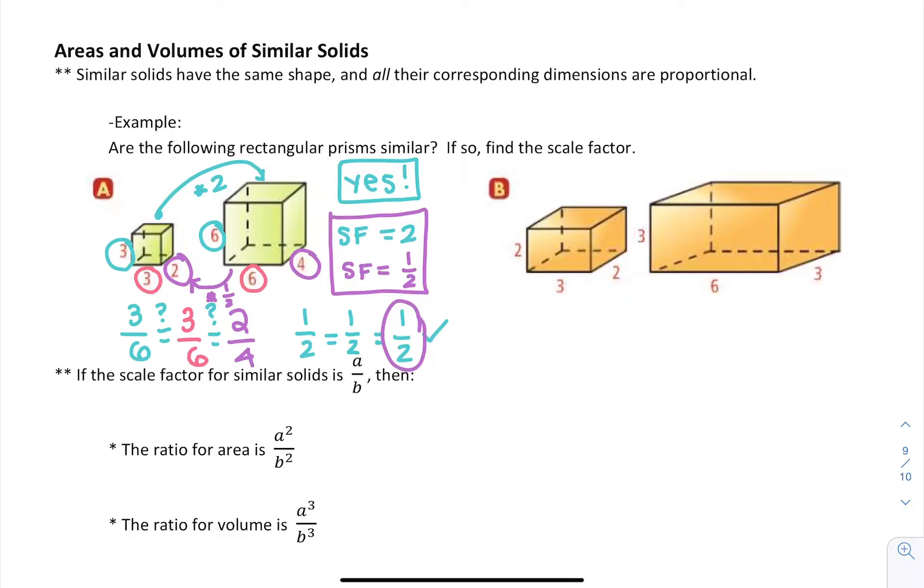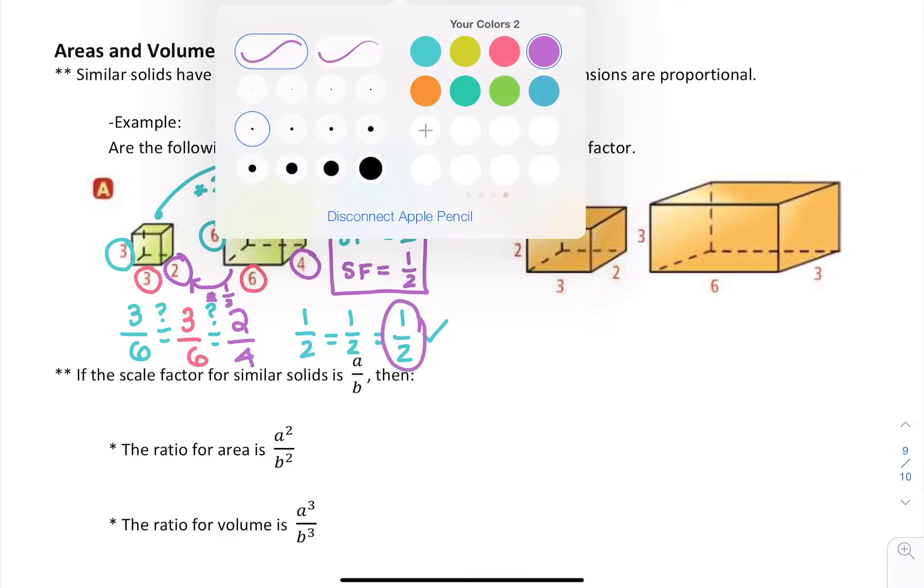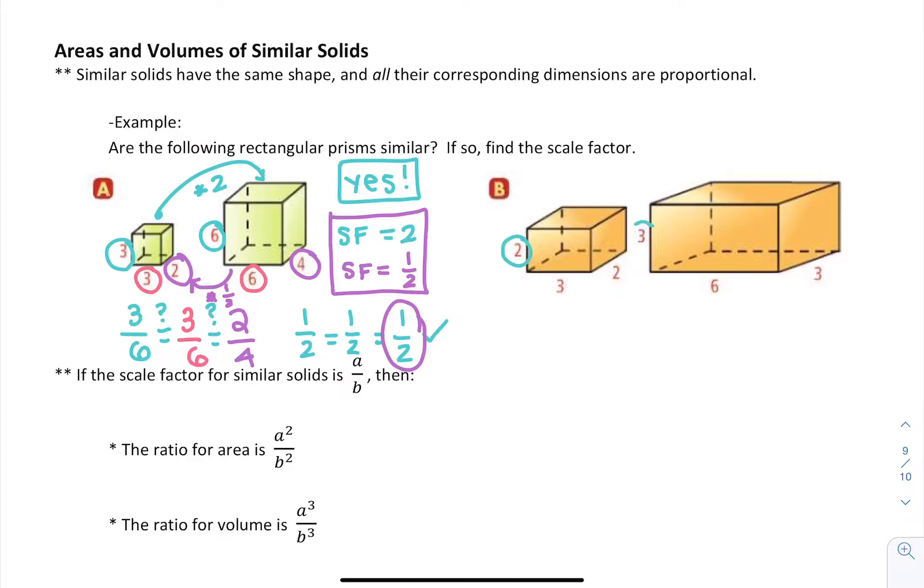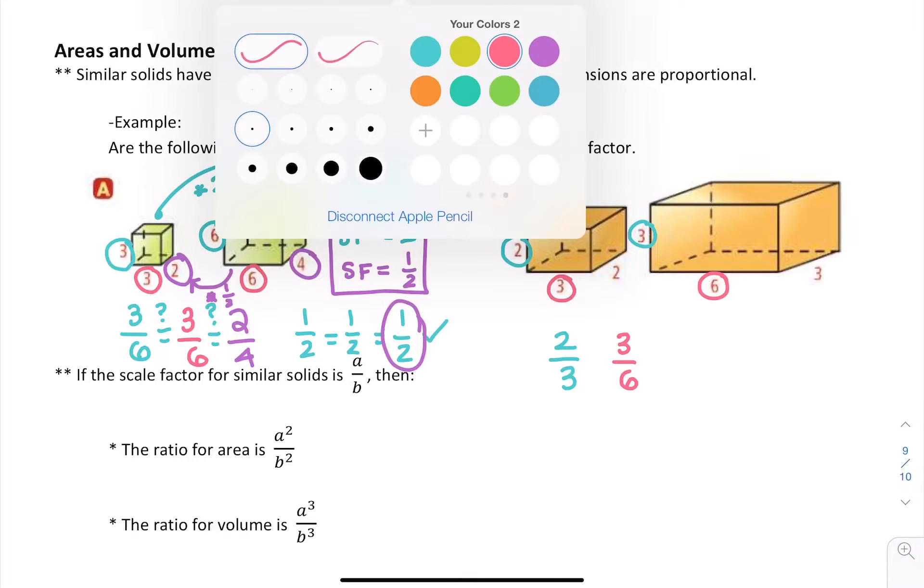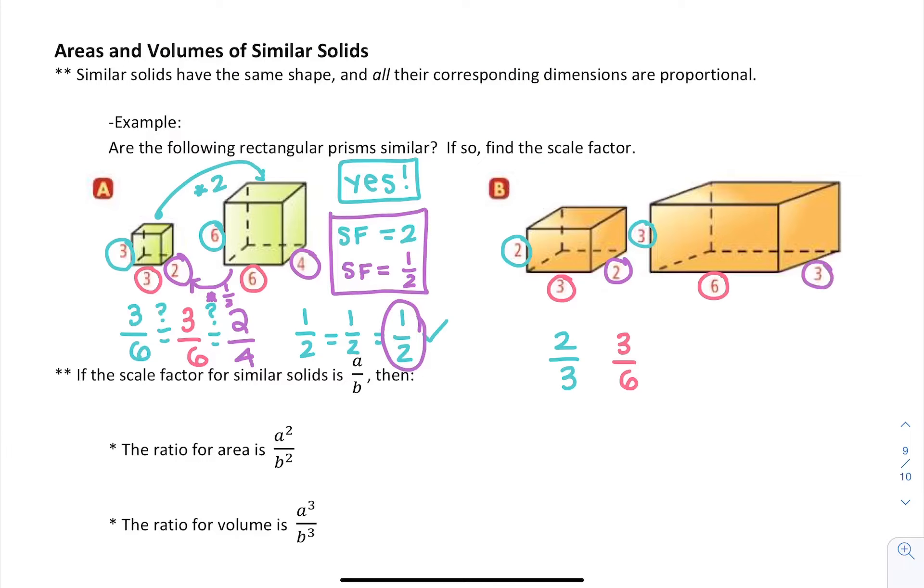In the next one, we're going to set up a proportion. Our first pair is 2 and 3, our second pair is 3 and 6, and our last pair of sides is 2 and 3. So are these equal? Is 2 thirds equal to 1 half equal to 2 thirds? No, they're not equal. So they are not similar, because all of the dimensions are not proportional.